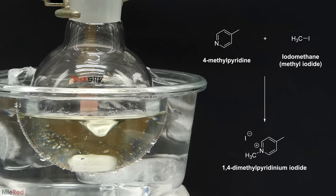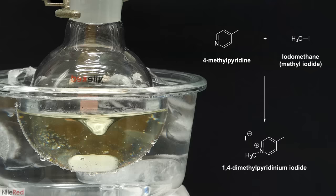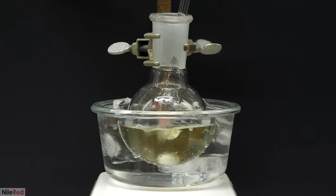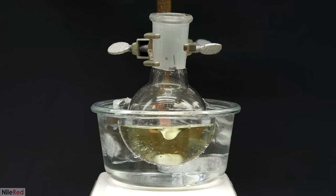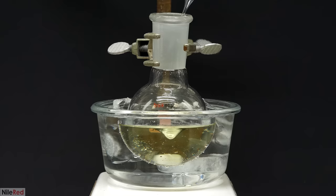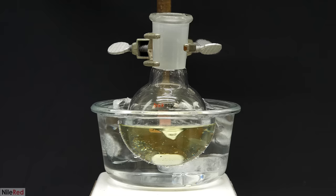With each addition, it didn't look like much was happening, but it was slowly getting more and more yellow. What was happening here was a relatively slow reaction between the 4-methylpyridine and the iodomethane. The major product of this is 1,4-dimethylpyridinium iodide, which has a slight yellow color. The reason I did this in an ice bath and added the iodomethane slowly was just to keep things under control. When the iodomethane's added, it can generate some heat, and if this was all done at room temperature, it might have heated things up a bit too much.